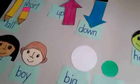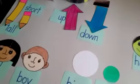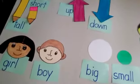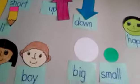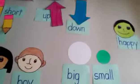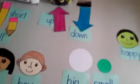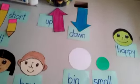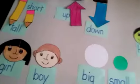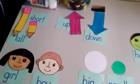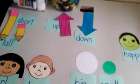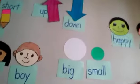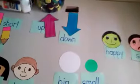When I say opposite, you say different. When I say opposite, you say different. Opposite, different. Opposite, different. Happy and sad, big and small. When I say opposite, you say different. Boy and girl, tall and short. When I say opposite, you say different. Opposite, different. Opposite, different. Happy and sad, boy and girl, big and small, tall and short.